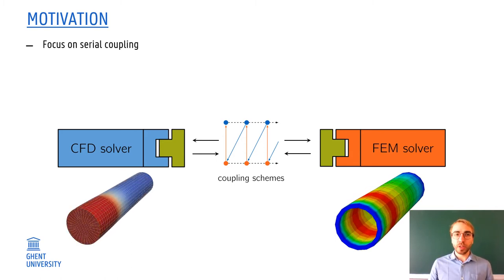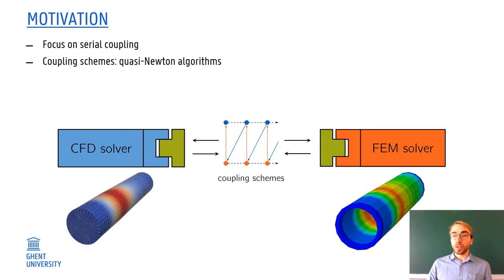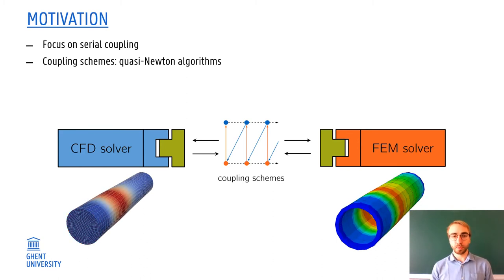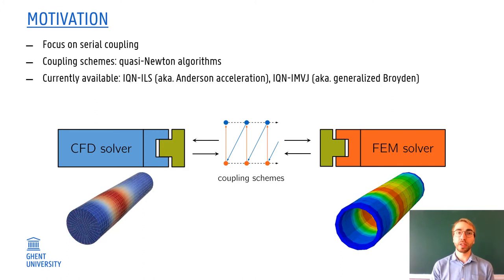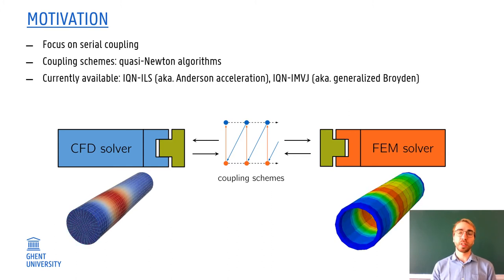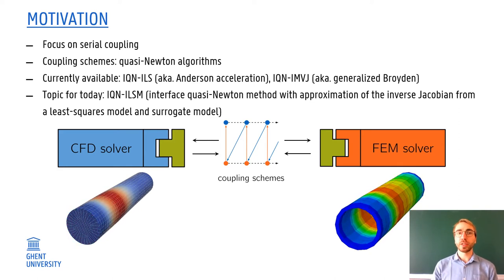So what will I not talk about? I will not talk about parallel coupling, but I will focus on serial coupling. Whatever I tell today can be easily translated to parallel coupling as well. I will not talk about relaxation or Aitken relaxation, but I will talk about more advanced and more capable quasi-Newton algorithms. The quasi-Newton algorithms which are currently available within preCICE are IQN-ILS, also known as Anderson Acceleration, and IQN-IMVJ, also known as Generalized Broyden.